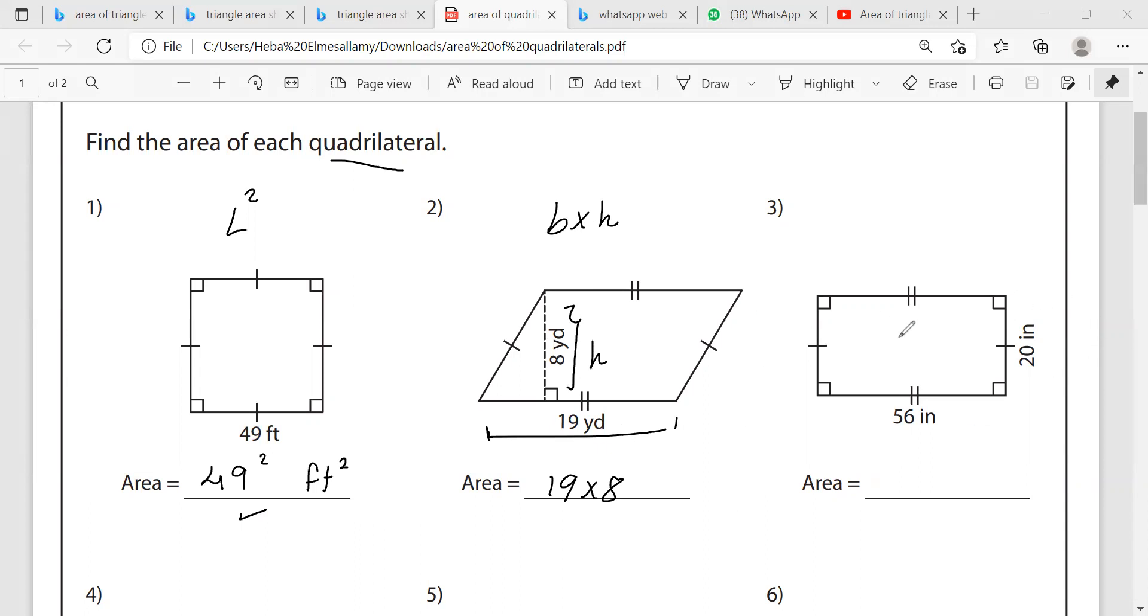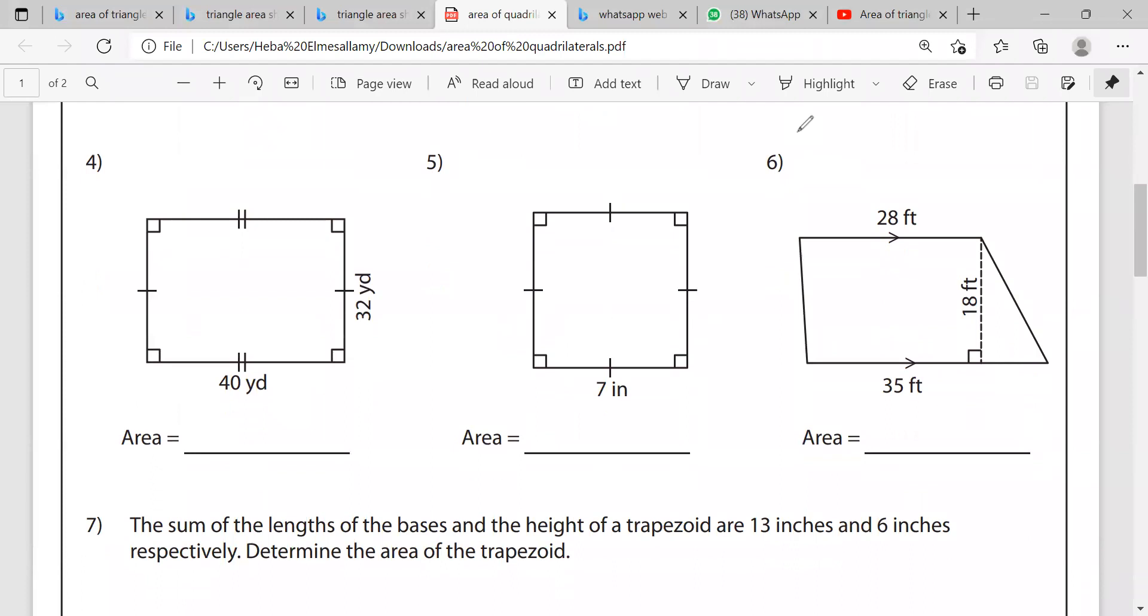Question three. I have a rectangle. The area is length multiplied by width. So I have here 56 multiplied by 20. I will multiply the two sides by each other to get the area.